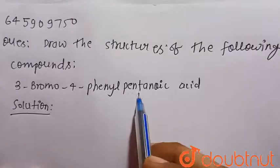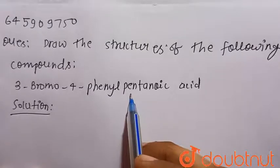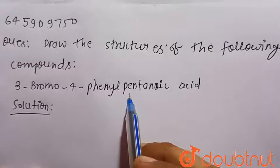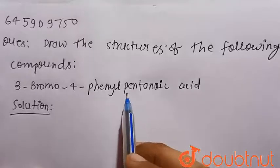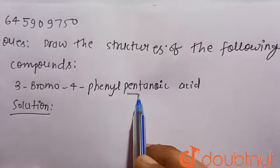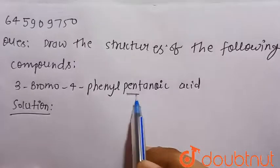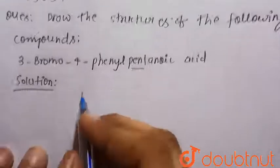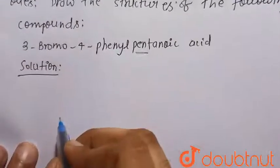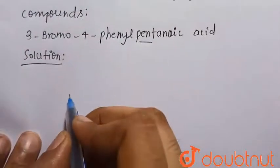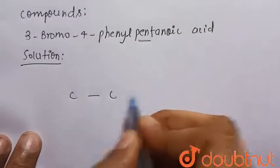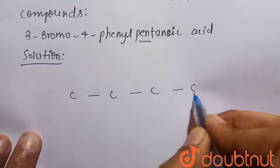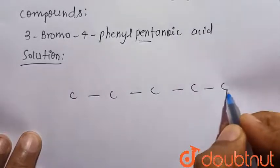Pentanoic acid means the parent chain has 5 carbons, because 'pent' is given in the compound name. So there are 5 carbons in the parent chain: 1, 2, 3, 4, and 5.